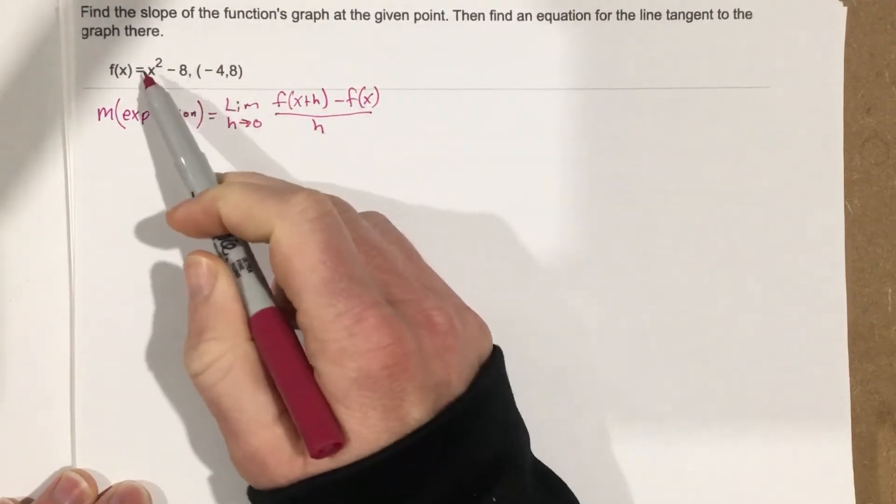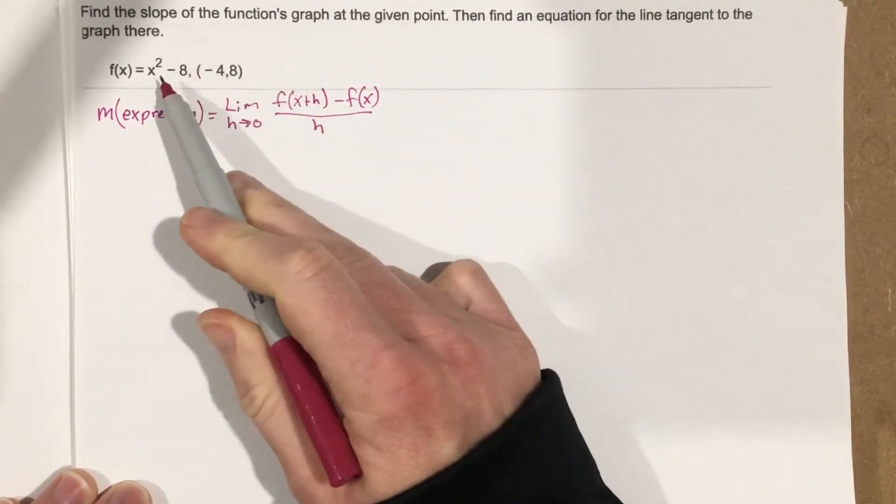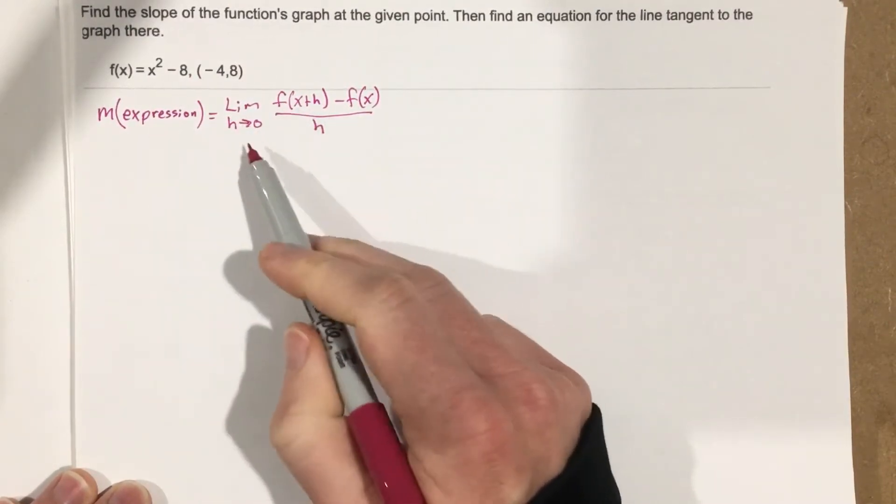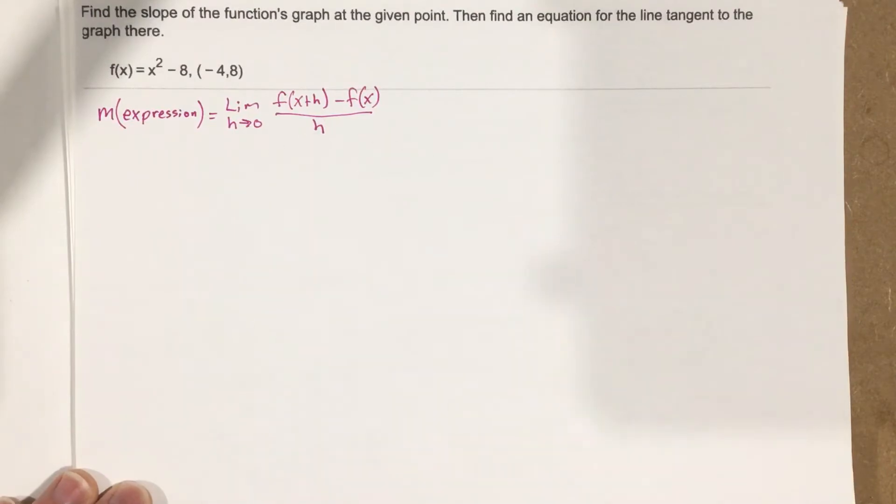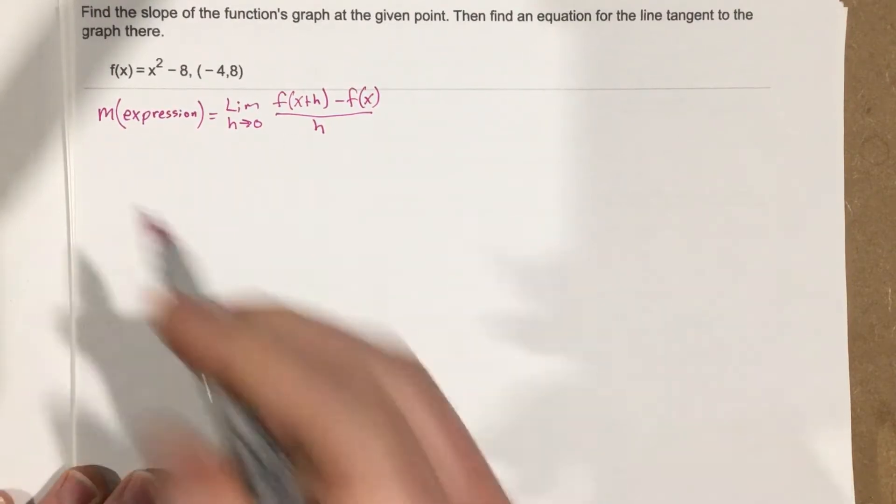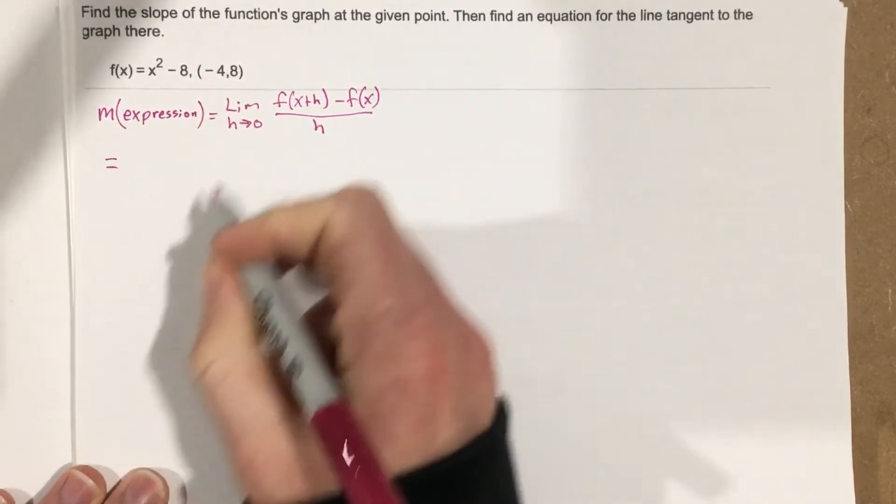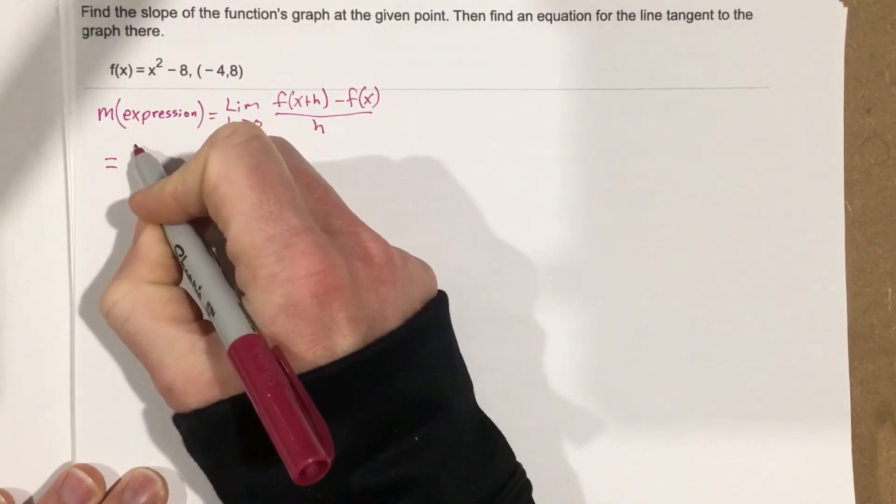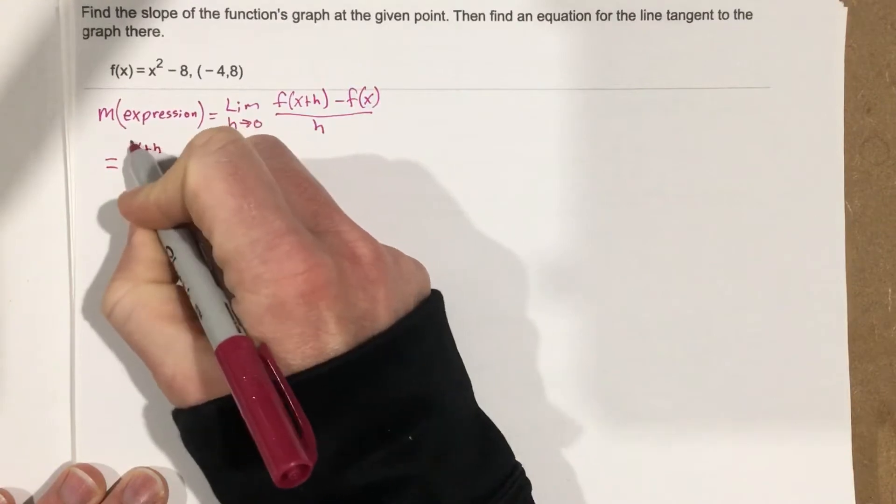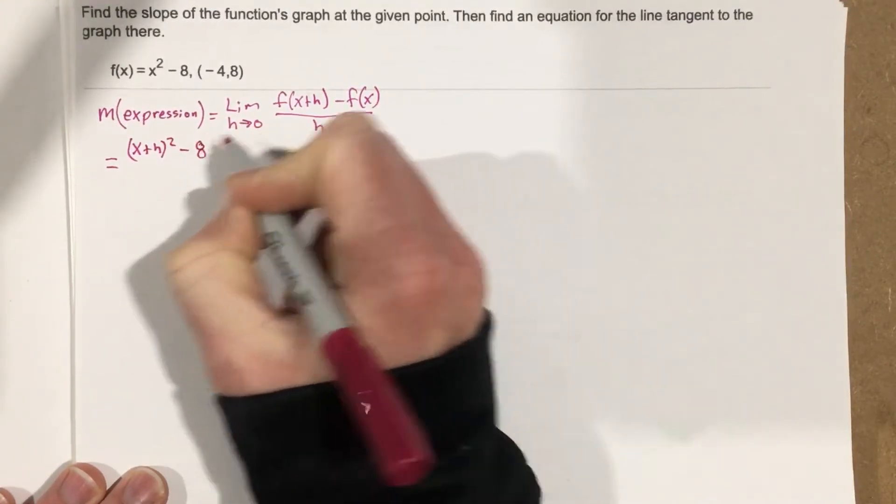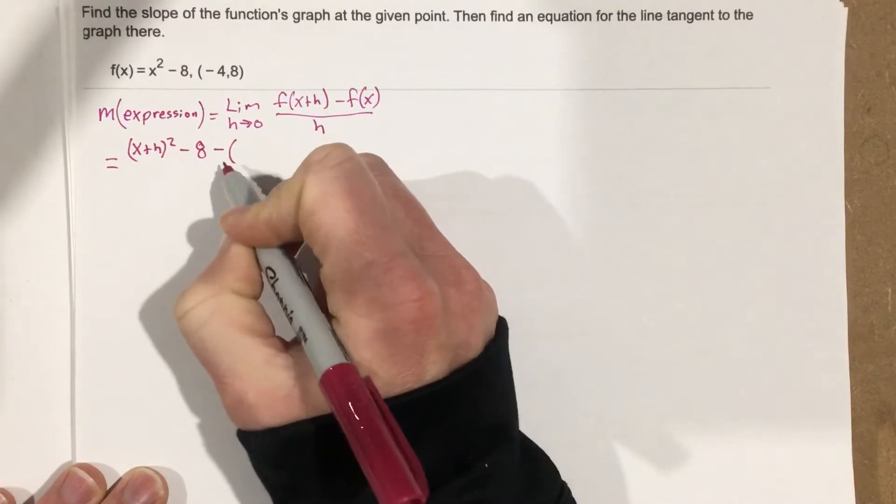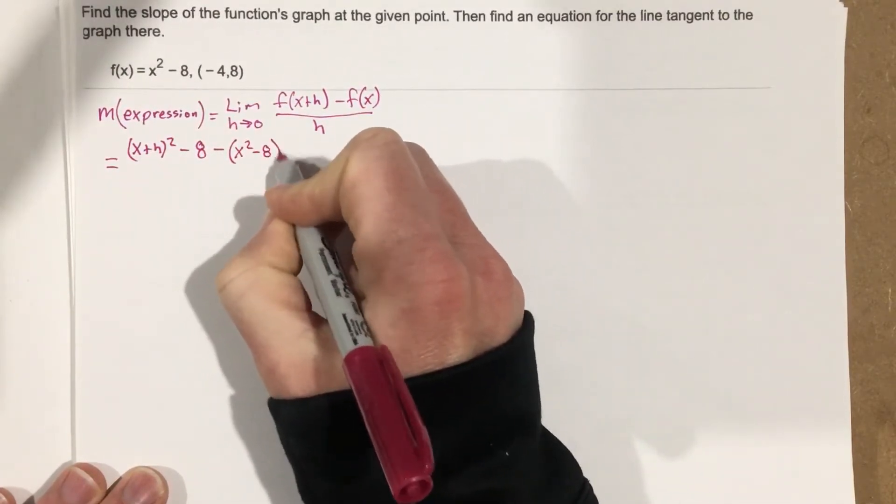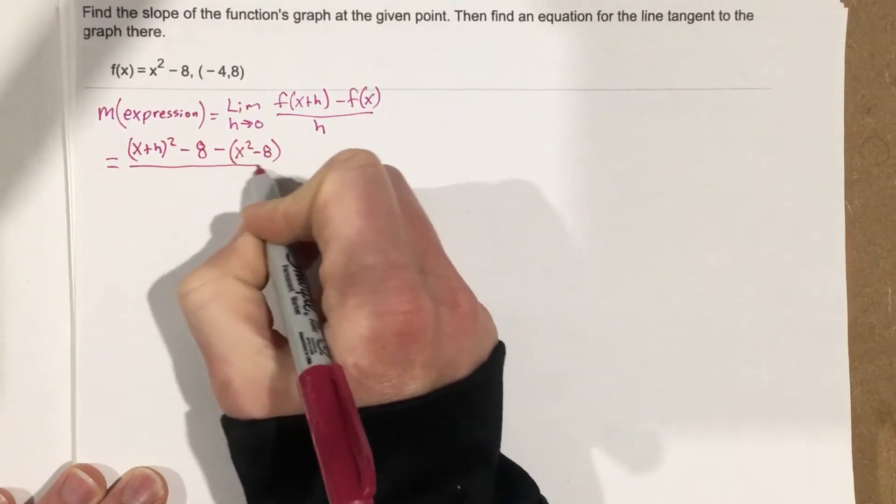So what we're going to do is take this function and plug in x plus h into it, and then the same thing with x. And we're going to evaluate this limit. Notice when I plug in 0 right now I get division by 0, so our goal is to cancel h. So we're going to say equals f(x+h), so let's take that function. We're going to say (x+h)² - 8 minus the original function which is x² - 8, that's going to be all over h.